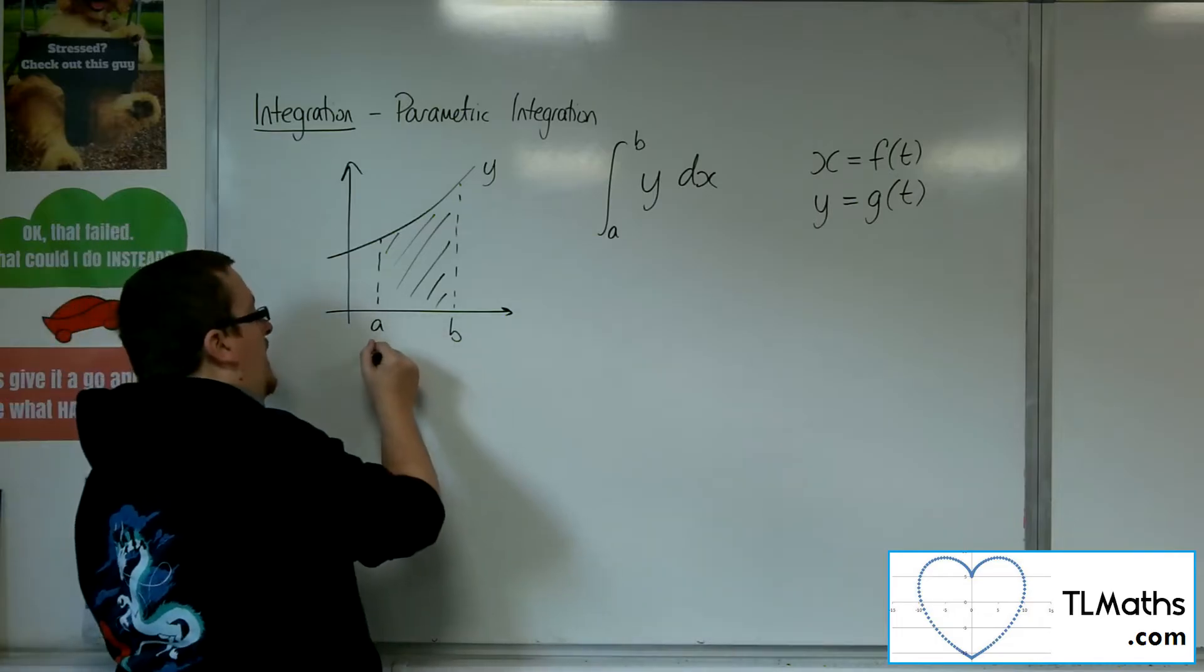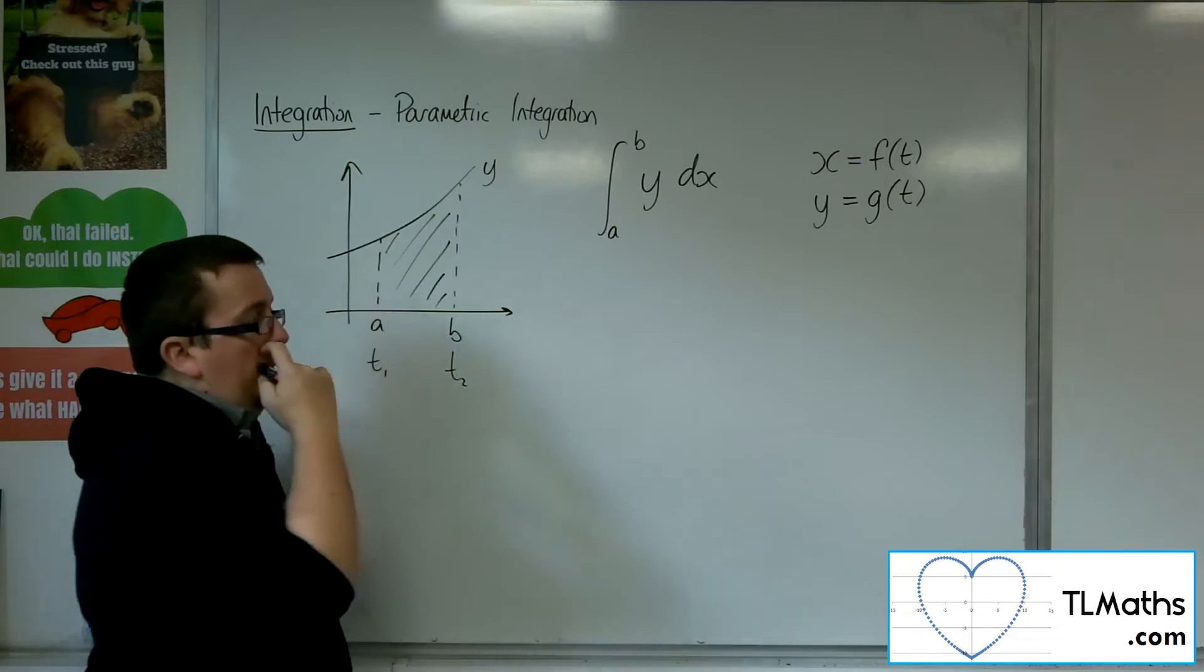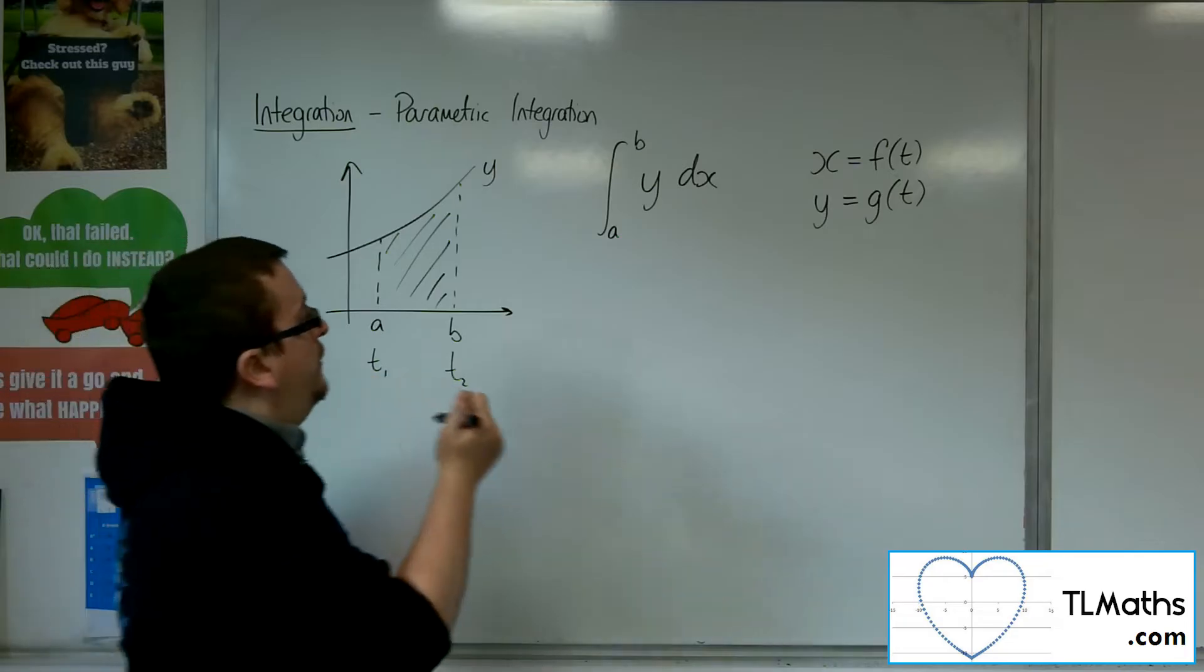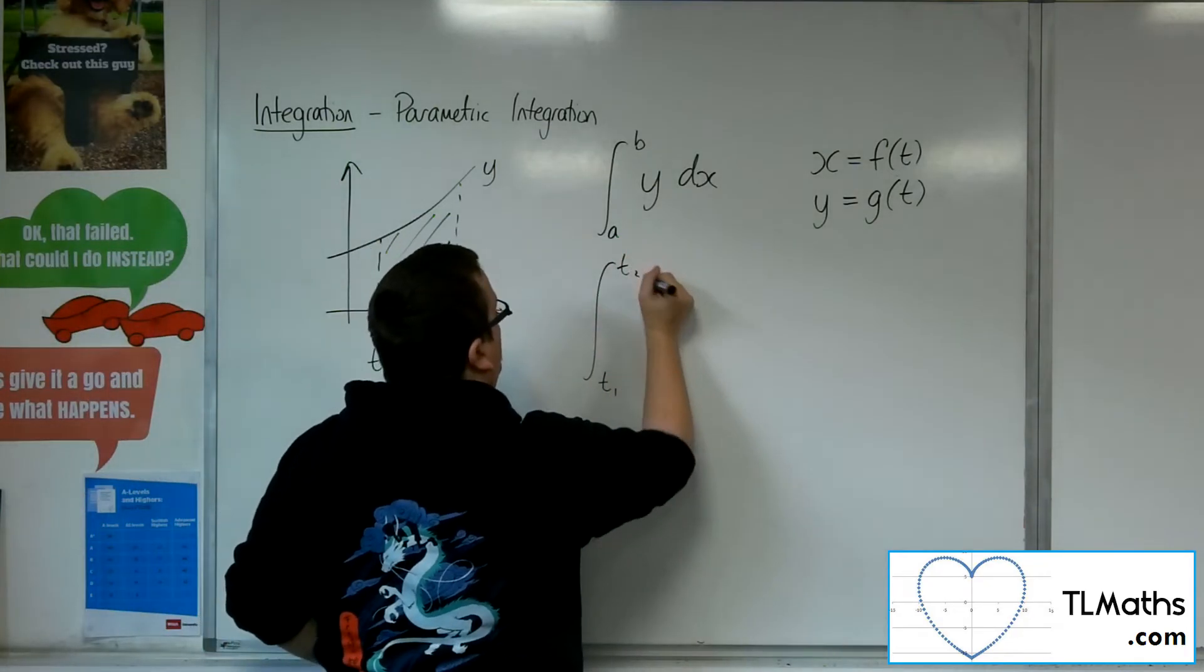So there will be a t1 and a t2, which are going to be equivalent to where a and b are. So in that way we can integrate between t1 and t2.